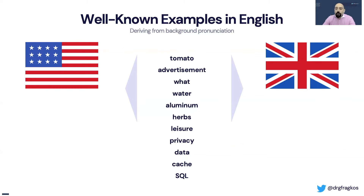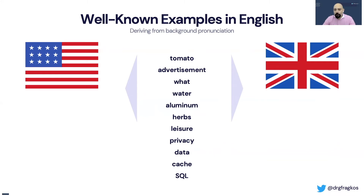Unconsciously, we tend to say things by emphasizing differently, having our distinctive speech spectrum. A few simple, well-known examples between American English and the Queen's English are: tomato/tomato, advertisement/advertisement, what/what, aluminum/aluminium — and my favorite one: it is SQL, not sequel. Well, you can fight me afterwards on this.